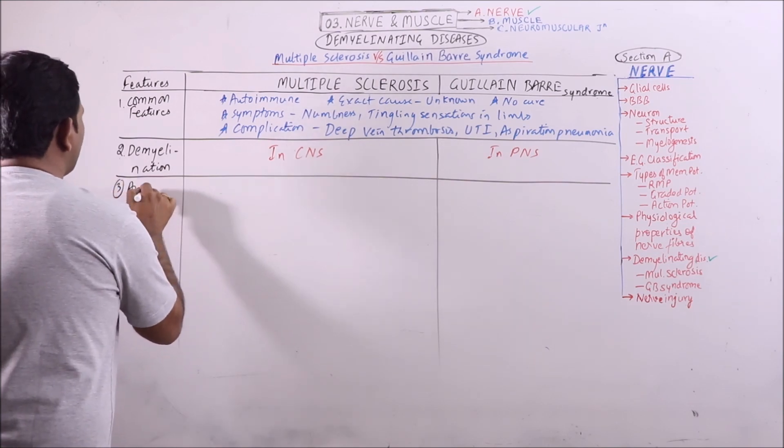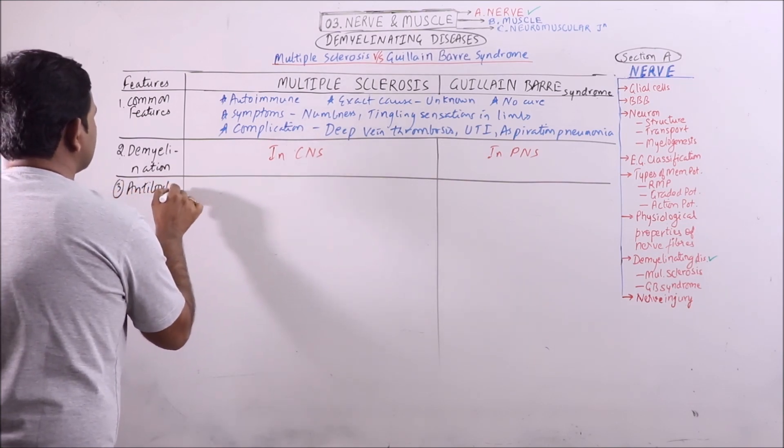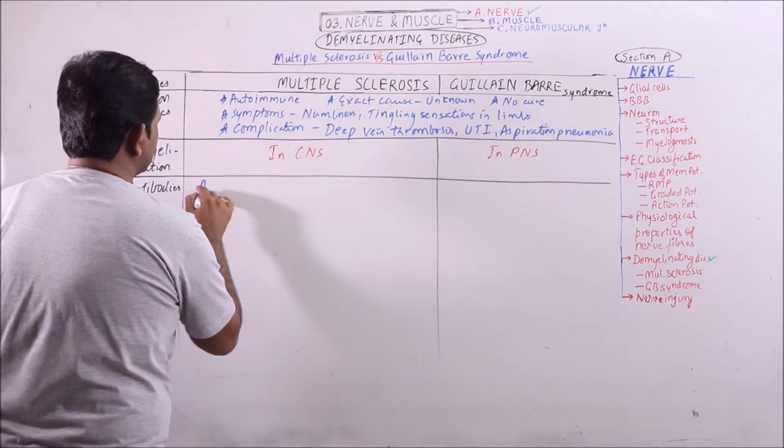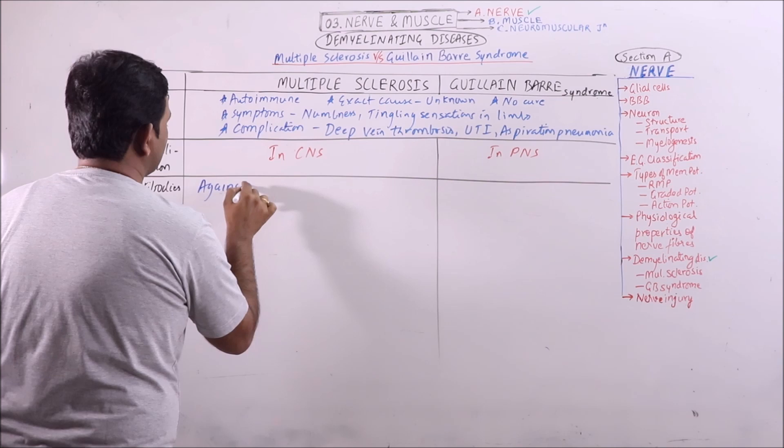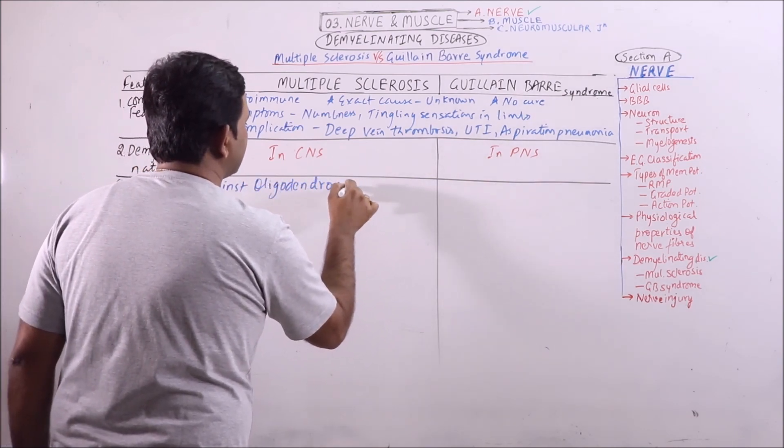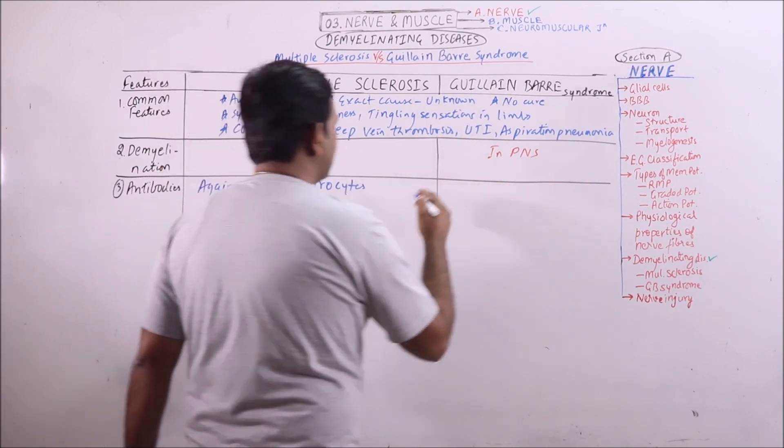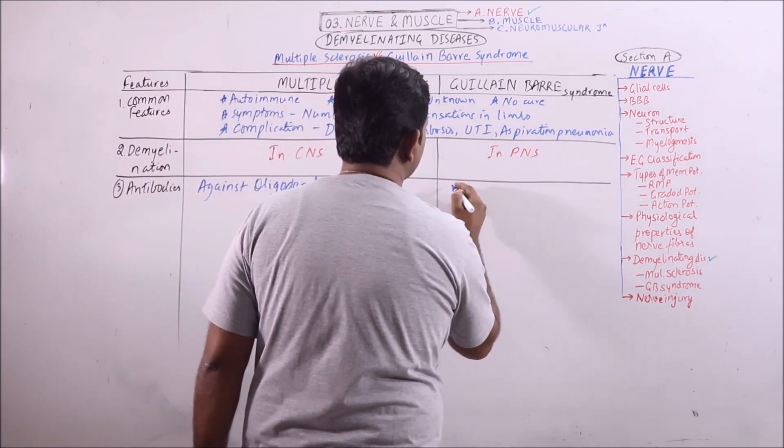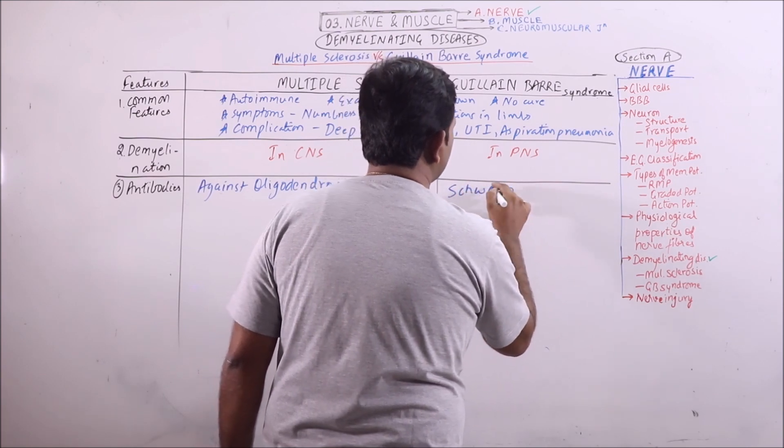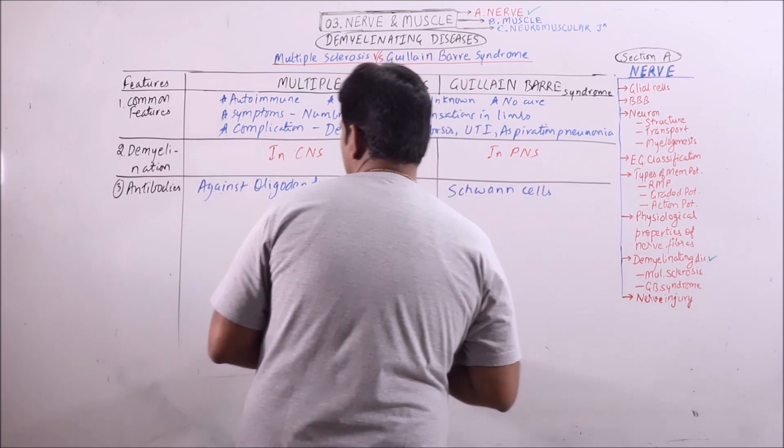Antibodies are formed against oligodendrocytes which results in demyelination, and here the antibodies are formed against Schwann cells resulting in demyelination.